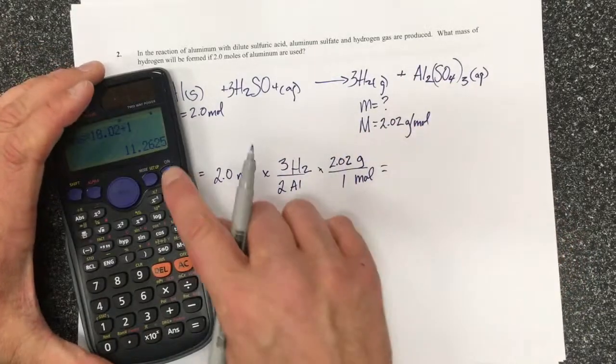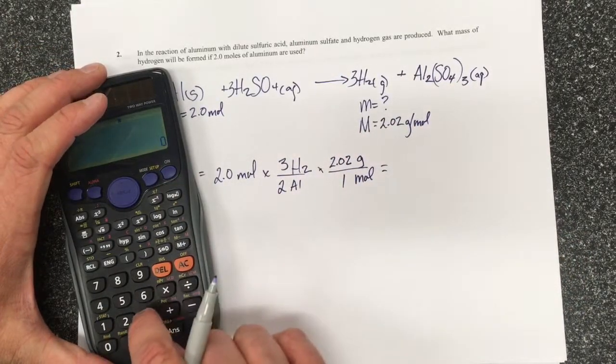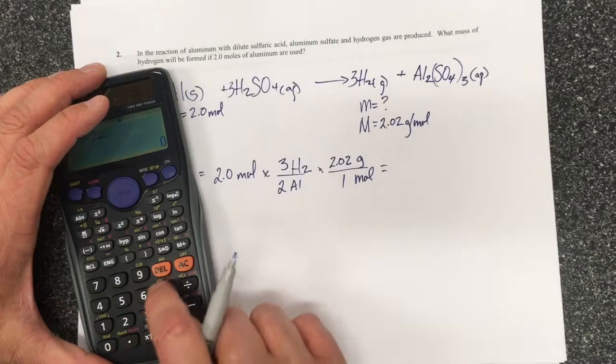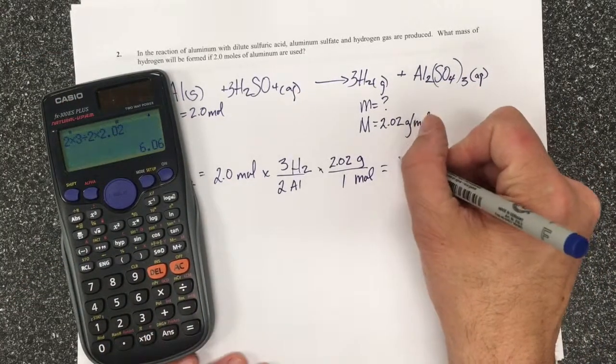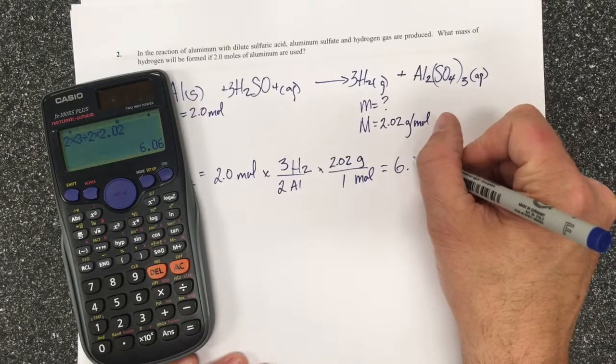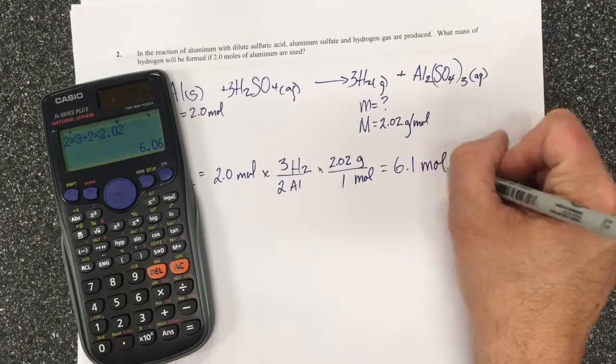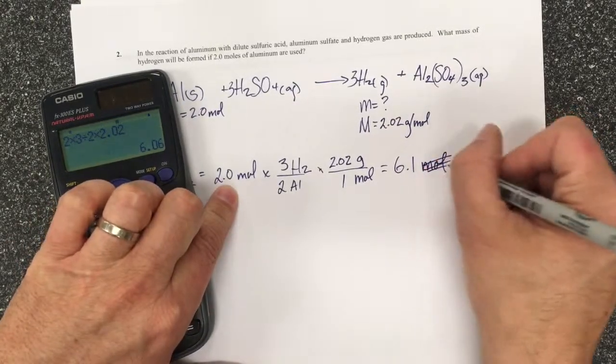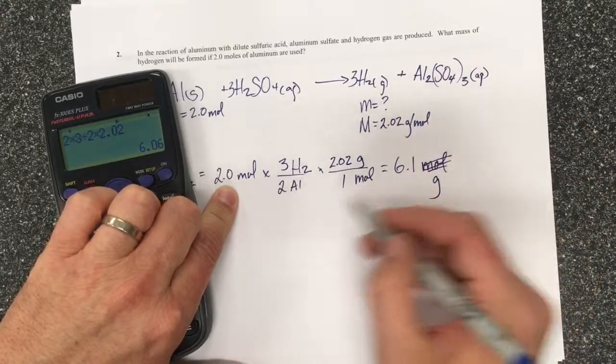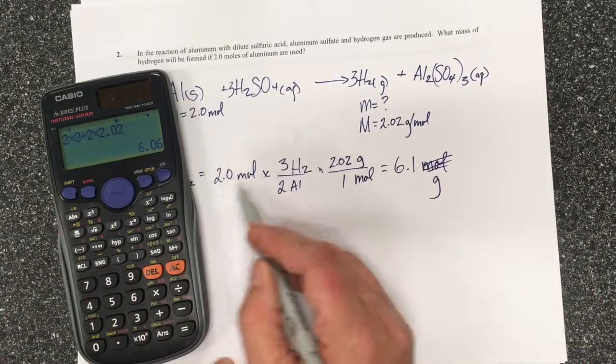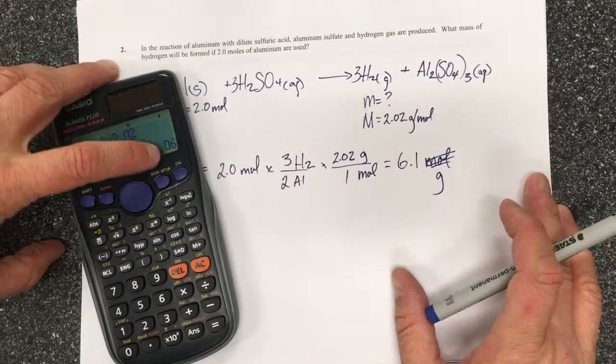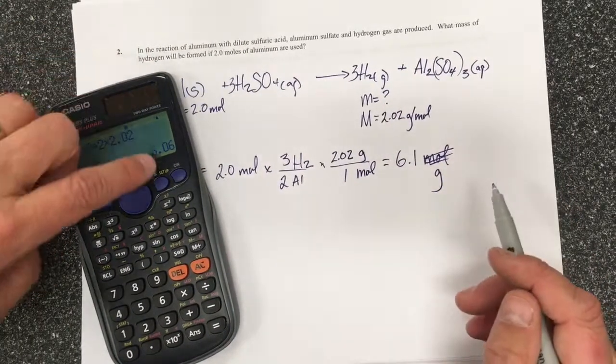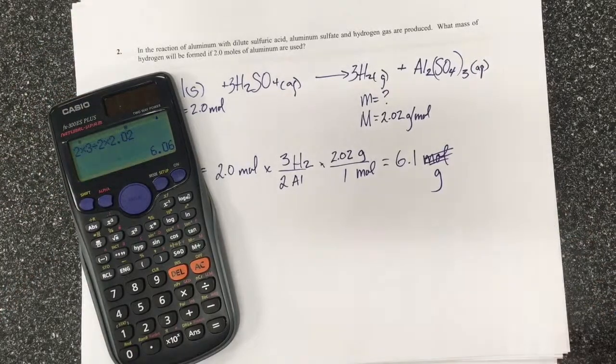So I'm going to take my 2 moles times 3 divided by 2 times 2.02 and I end up with 6.06 so this will be 6.1 grams, not mole. This only has two significant digits because this number had two sig digs. My number calculated was 6.06 so I have to round it up because the 6 is greater than or equal to 5.